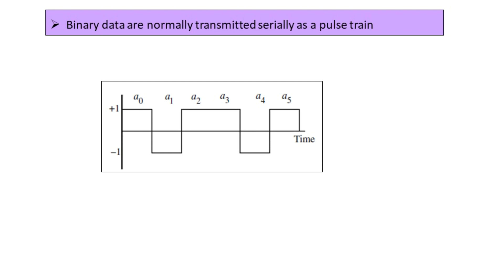Here a0 has plus 1 value and a1 has minus 1 value. You can have plus and minus values or 1s and 0s — it is just the representation of binary data. The pulse train shows clear amplitude levels at all times on the time axis.